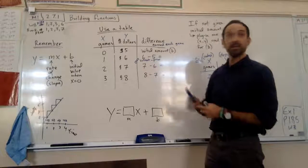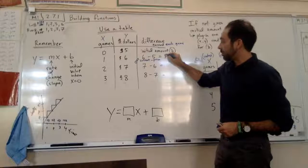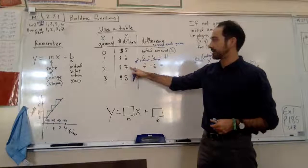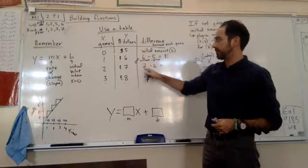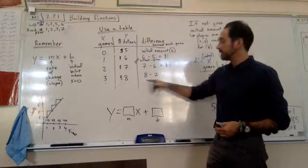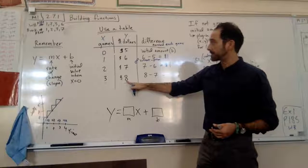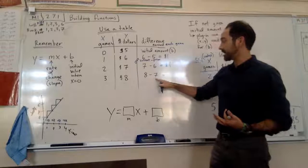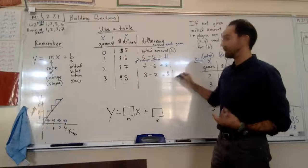So you see here that after one game, now you have six bucks in your pocket. What's the difference? How much money did you earn? You just go six, that's your current amount, minus out the prior amount. So six minus five is? One. One dollar. You got one dollar. After the second game, you have seven bucks. Seven minus six? One dollar.